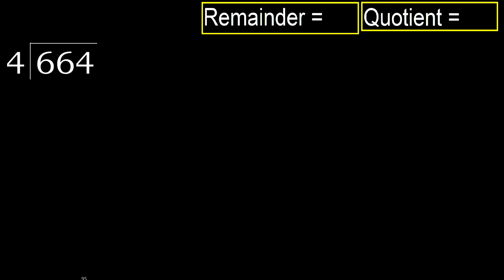664 divided by 4. 6 is not less, therefore with 6. 4 multiplied by which number is nearest to 6 but not greater? 4 multiplied by 2 is 8, 8 is greater. Multiplied by 1 is 4, it is not greater, ok.